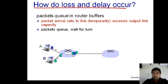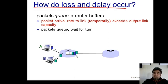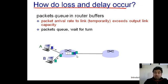So the queuing delay for the second packet would be L/R. If a third packet arrives behind the second, its queuing delay would be 2L/R — the transmission delay of the two packets ahead of it. In general, queuing delay equals the number of packets ahead in the queue multiplied by L/R, the transmission delay of a single packet.